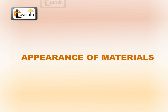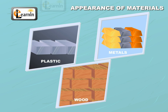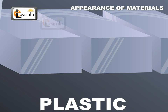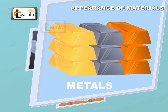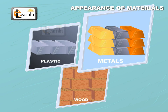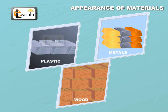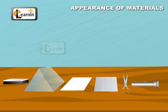Appearance of Materials. Objects have different appearances as they are made of different materials like plastic, metals or wood. Let us take a closer look at the appearance of some objects.